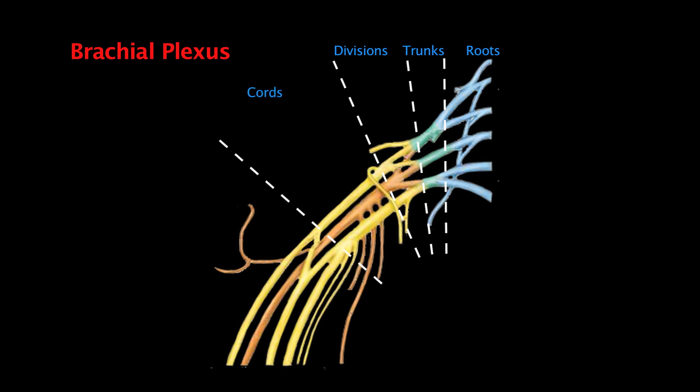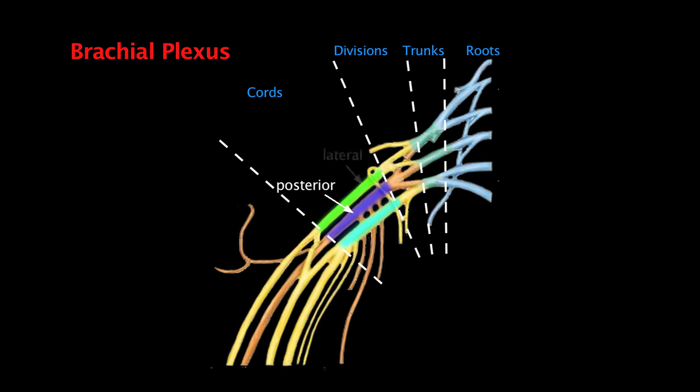After the divisions merge, we end up with the lateral, medial, and posterior cords. The posterior cord is easy to identify — it's the cord that comes after all three of the posterior divisions merged together. The lateral cord comes from the anterior divisions of the superior and middle trunks, while the medial cord comes from the anterior division of the inferior trunk. Take a minute to review these main sections of the brachial plexus before moving on, as the branches get more complicated and harder to remember.